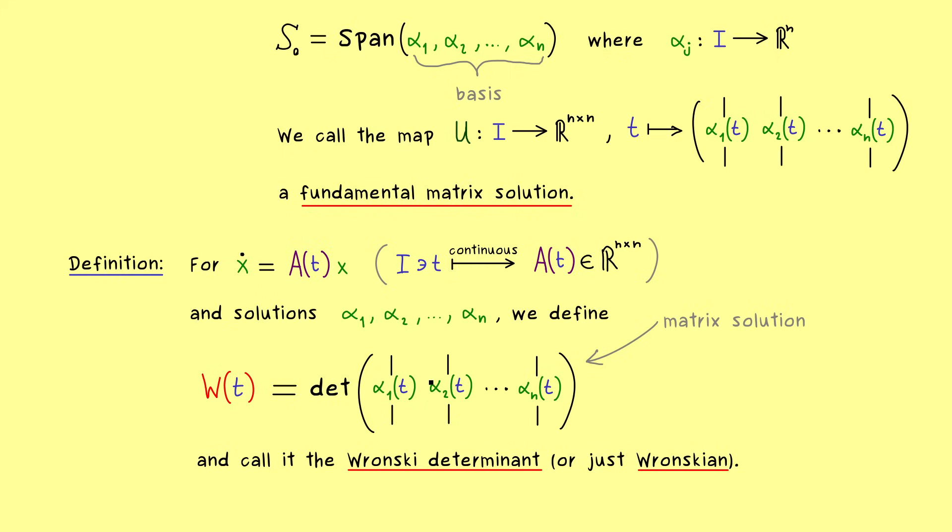Now you should immediately see the advantage of this new quantity because it's just a real-valued function. For every t, we get out a real number, and this number can actually tell us if we have a fundamental matrix solution or not.